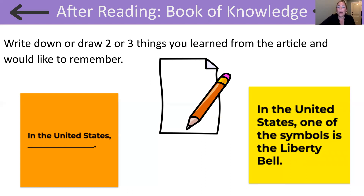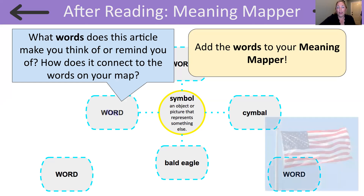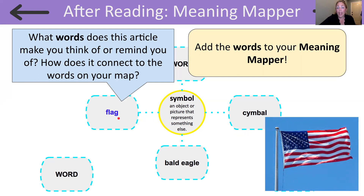Readers, now let's take out our meaning mapper — maybe you have a virtual one or one on a piece of paper. I want you to think about another word that you can connect to our focus word, symbol. Remember, a symbol is an object or picture that represents or stands for something else. Maybe you can connect that word to our focus word, or maybe you can connect it to another word on your map. Pause the video now and add that word to your meaning mapper. As we read this article today, I thought of flag, because flag is a symbol — another symbol that represents or stands for the United States of America.